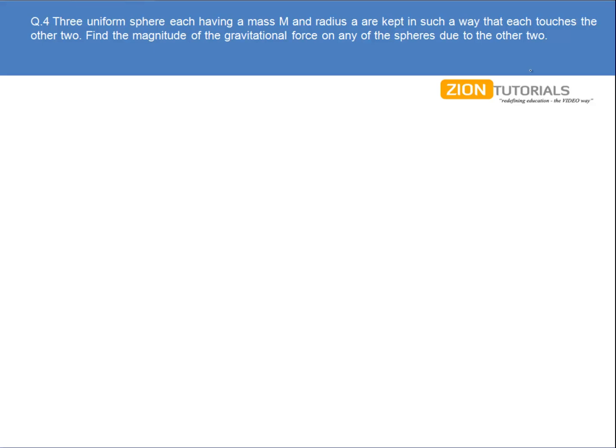Three uniform spheres each having a mass M and radius A are kept in such a way that each touches the other two. Find the magnitude of gravitational force on any of this sphere due to the other two.